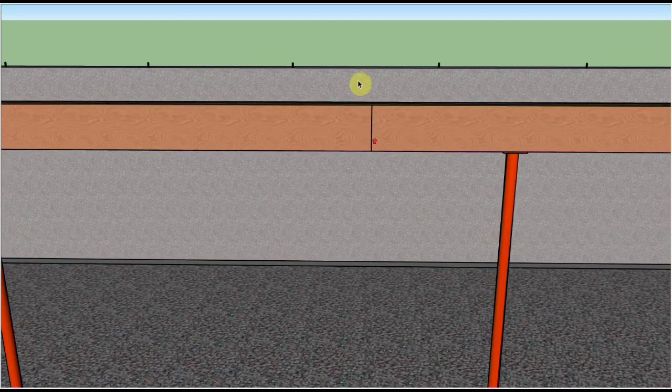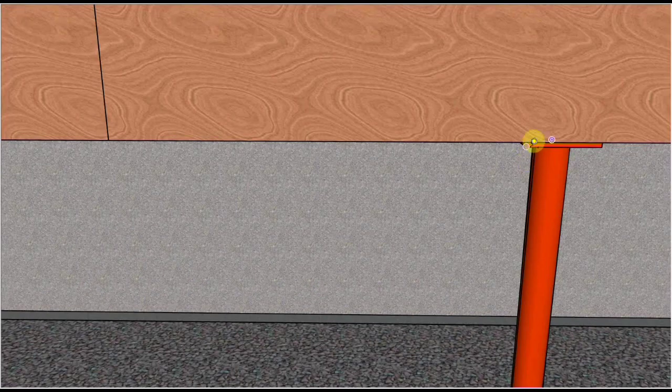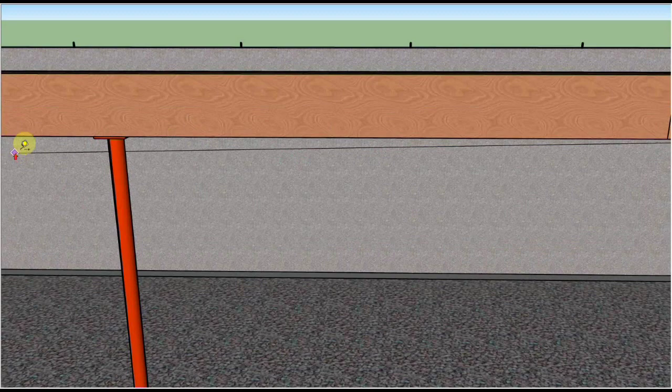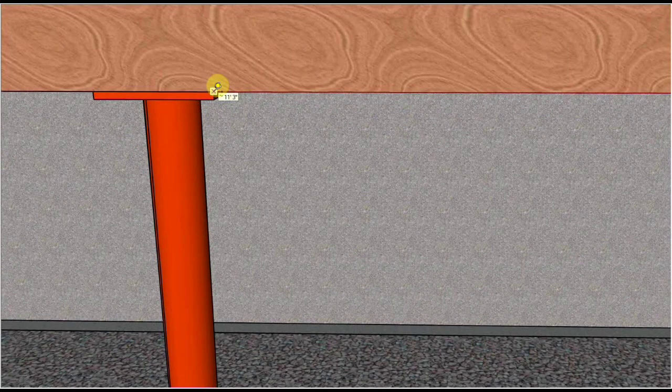So in this case, in this span, it would be between the two plates on these columns. Here the clear span of this middle span of the beam is 11 foot 3 inches.